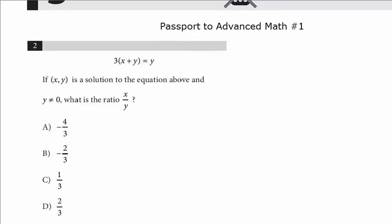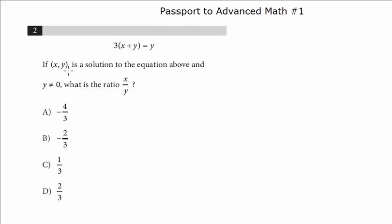Question number two: If x, y is a solution to the equation above and y does not equal zero, what is the ratio of x over y? This question may appear different since you may be used to solving for a single variable, but here we want x over y.